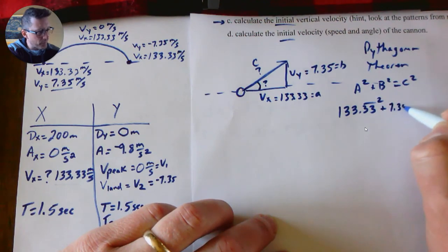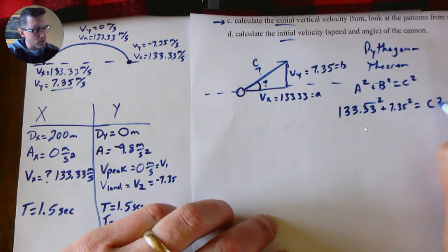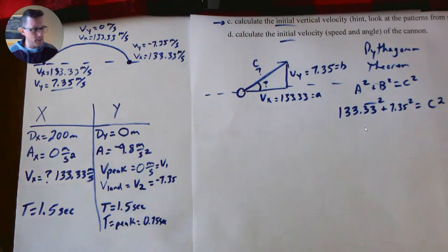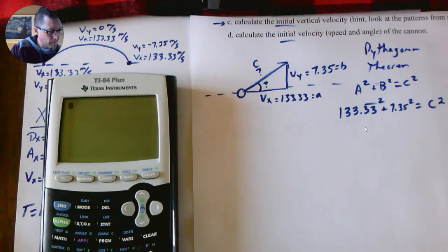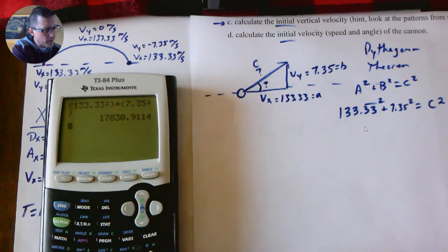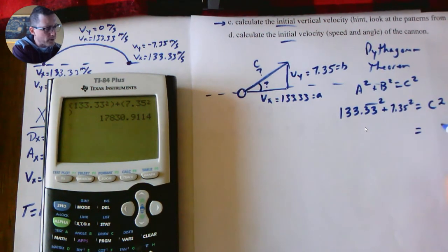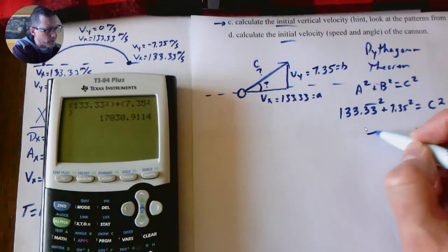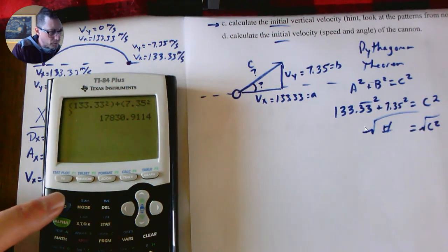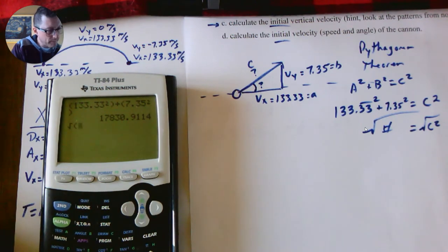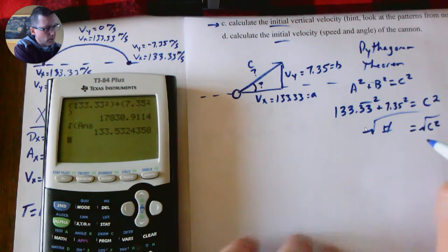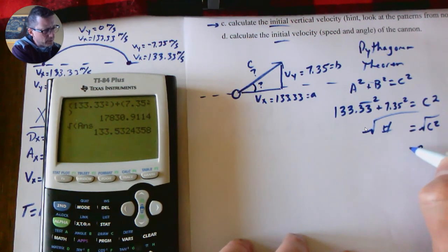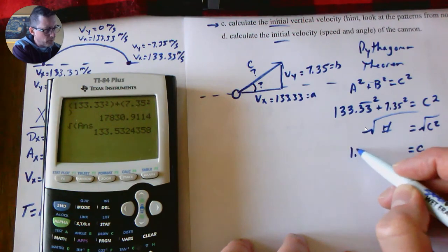Calculator time: 133.33 squared plus 7.35 squared—and also got parentheses in there just in case—that gives me that number. To get rid of the square on the c, I'm going to have to take the square root of everything. So I'm going to take a square root—second square button—my answer.